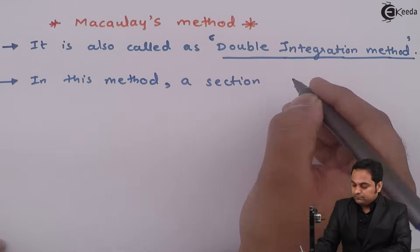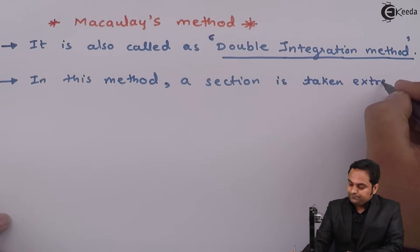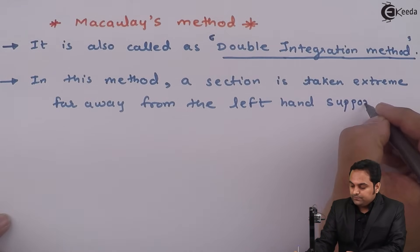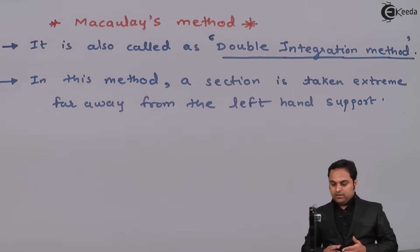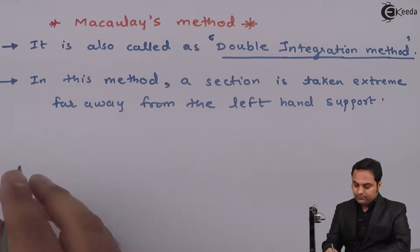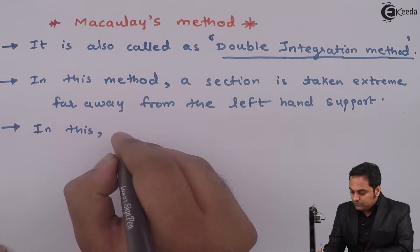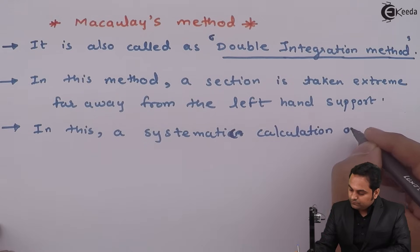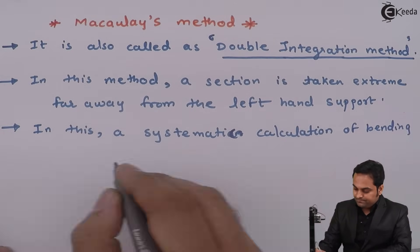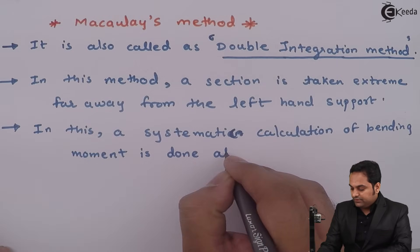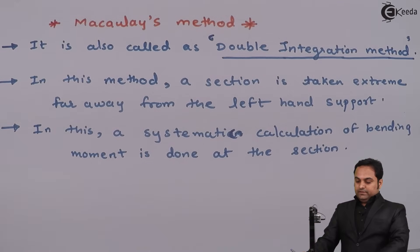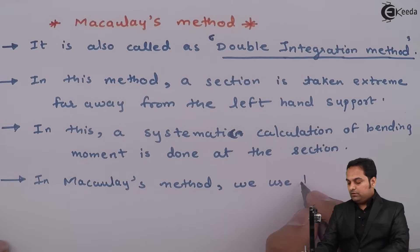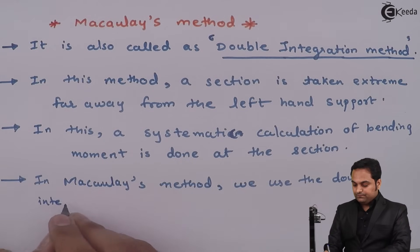In this method, a section is taken extreme far away from the left hand support. So in Macaulay's method we take a section at extreme far away from the left hand support of the beam. Then a systematic calculation of bending moment is done at the section.